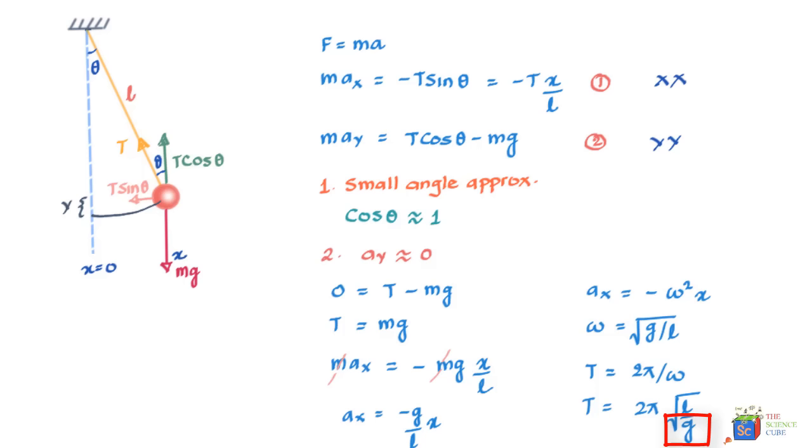Thus, if you are in outer space where g is close to 0, the mass will take a very long time to swing through an arc.